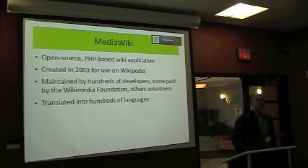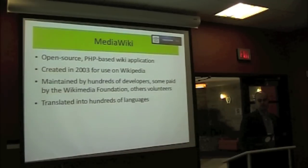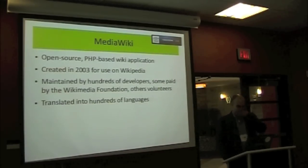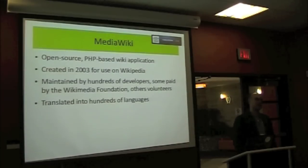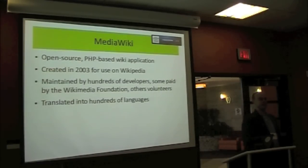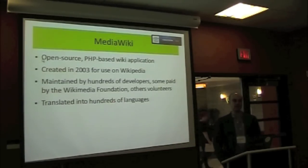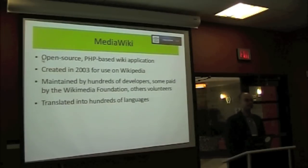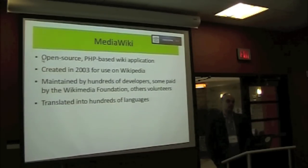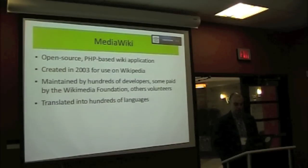MediaWiki is an open-source, PHP-based wiki application. It was created in 2003 for use on Wikipedia. Wikipedia was using some previous software before that, but they decided they needed their own thing. Since then, it's really taken on a life of its own. Right now, there are literally hundreds of people developing the software and working on all the extensions. A significant and growing number are paid by the Wikimedia Foundation, but there are a lot of volunteers also. It's been translated to hundreds of languages — that's one of the really amazing things about MediaWiki.